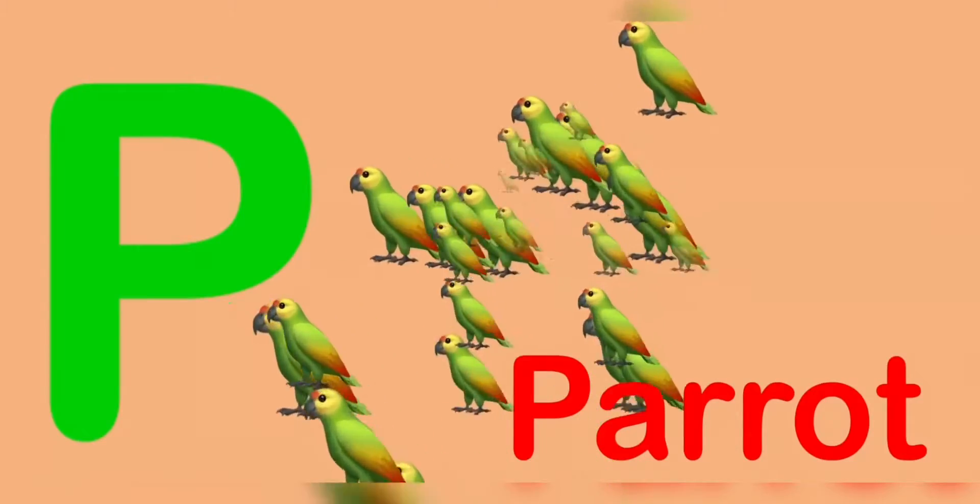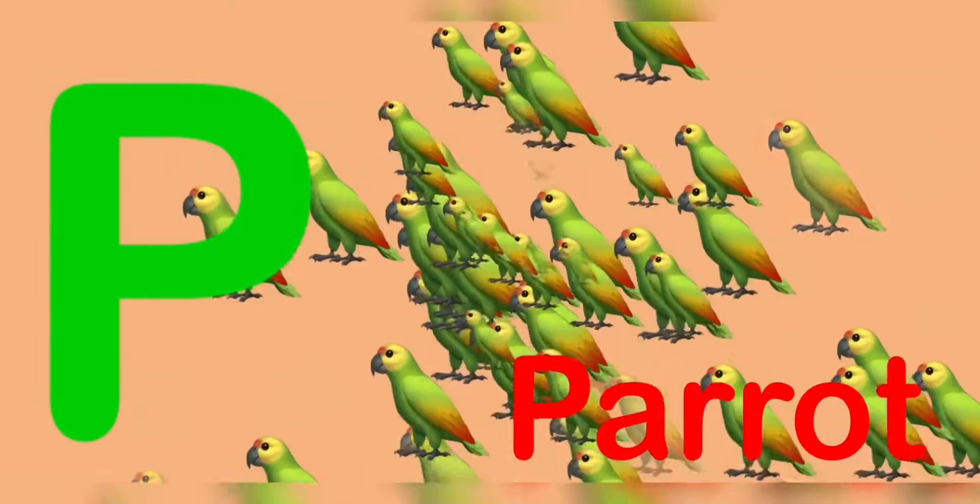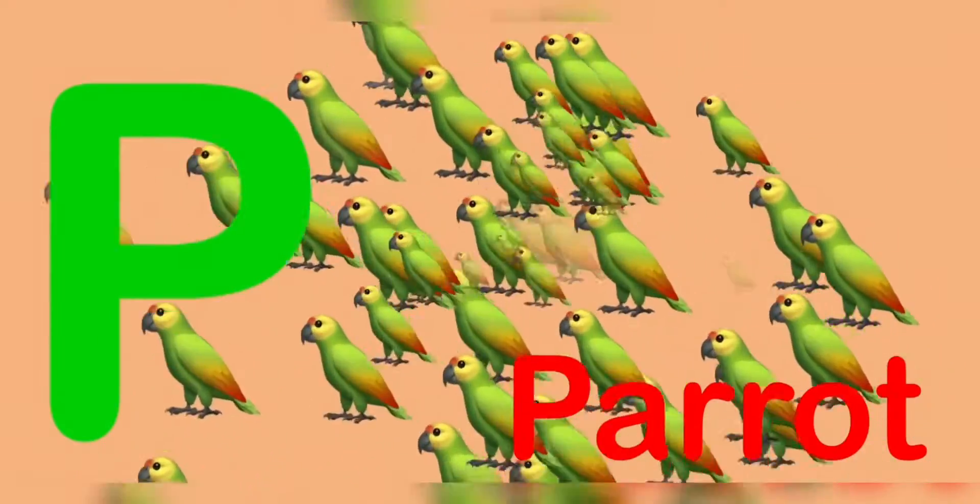O for orange. Orange means santra. P for parrot. Parrot means tota.